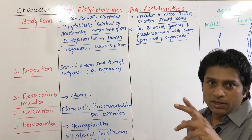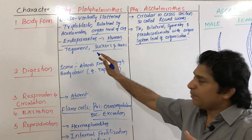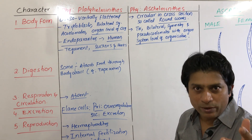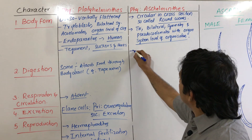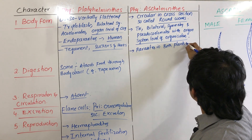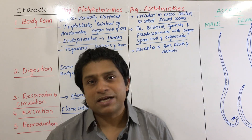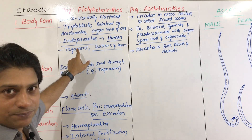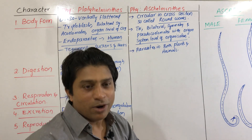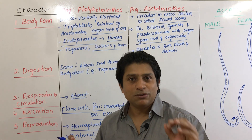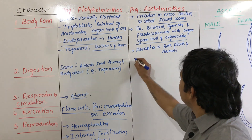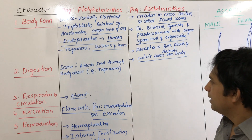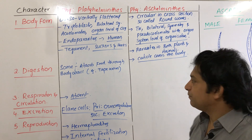Just like Platyhelminthes, Aschelminthes include both free-living and parasitic forms. Free-living forms can be terrestrial or aquatic, and parasites occur in both plants and animals. Their body is covered by a cuticle, which is also an enzyme-resistant layer — similar to the tegument in Platyhelminthes.